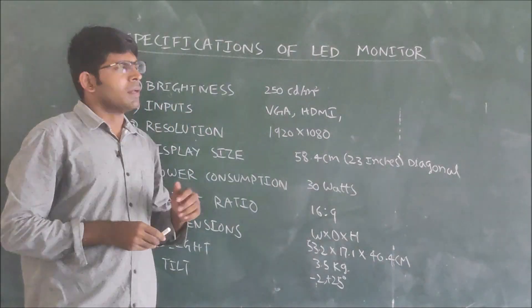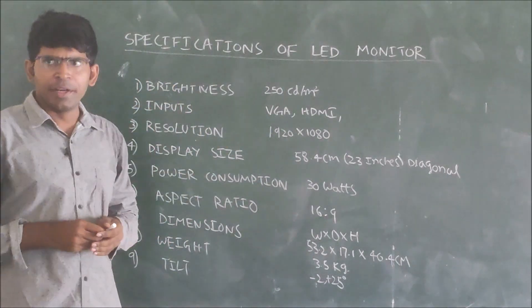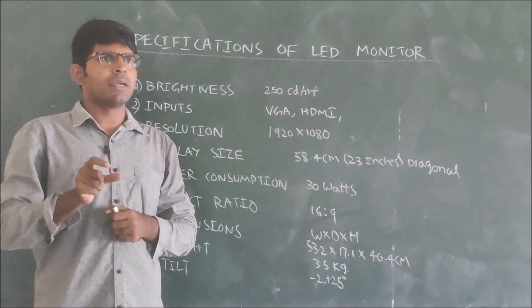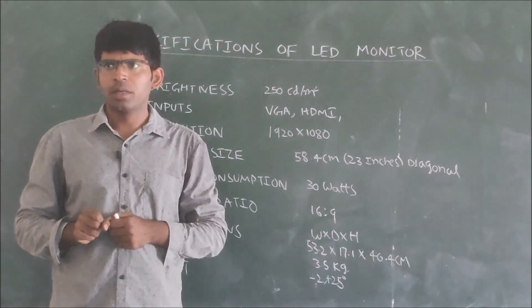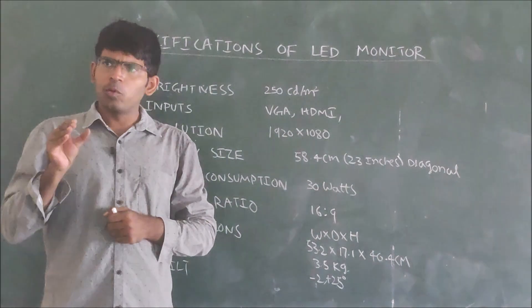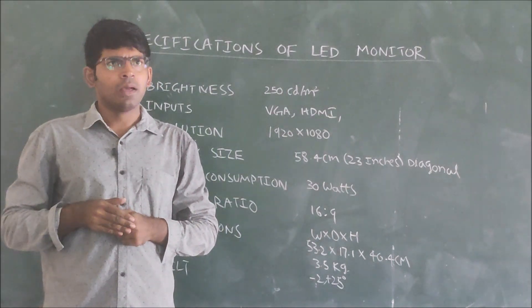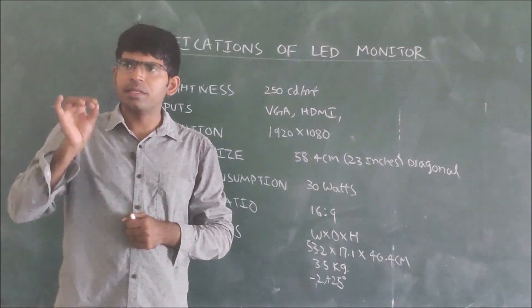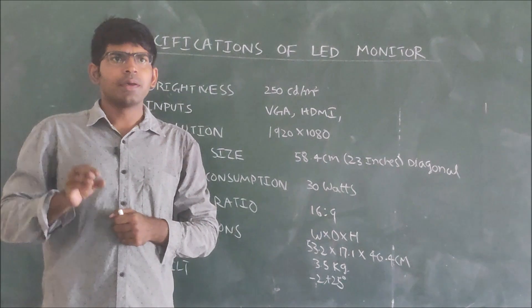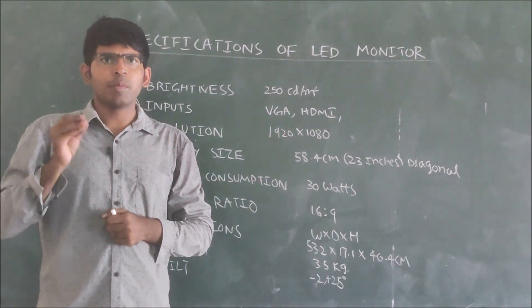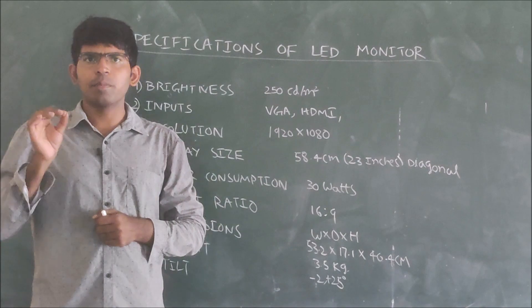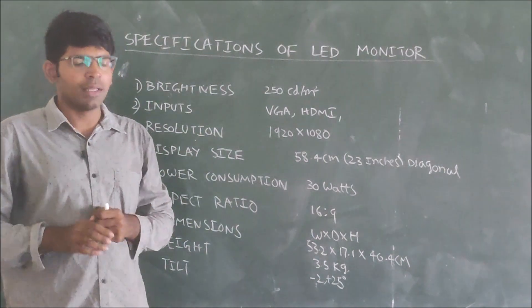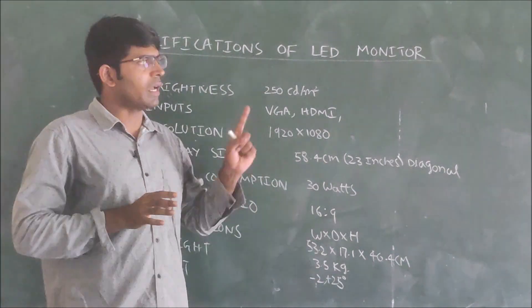Now we are discussing specifications of LED monitor. In the next class we will discuss how LED monitor differs from LCD monitor. LED monitor and LCD monitor both have LCD display, but LCD display does not generate light. We require a light source that may be CCFL or LED. If we are using LED as a light source for the LCD display, then such monitor is called LED monitor.